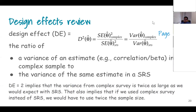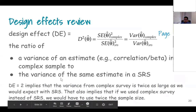The design effect is simply the ratio of the variance you get from your current complex design — whether a mixture of stratification, clustering, and weighting — versus what the variance would be if you had done sampling using SRS. This ratio is the design effect.